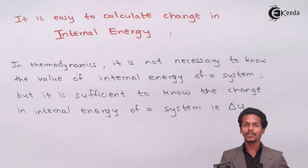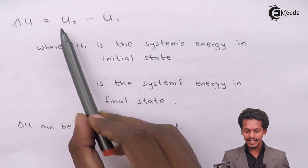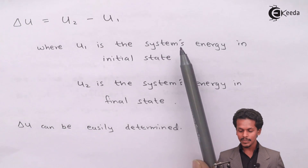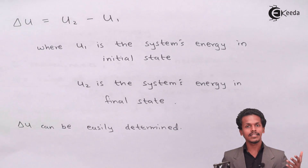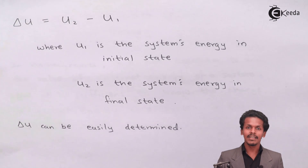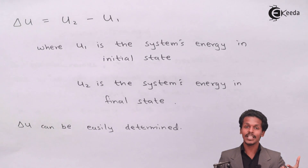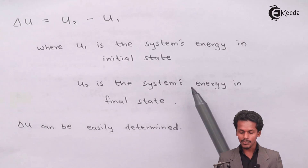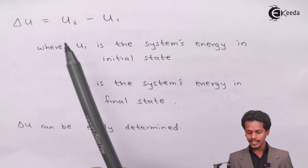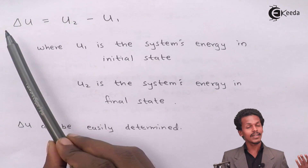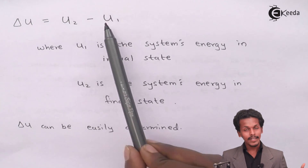Delta U is nothing but U2 minus U1. Here U1 is the system's energy in the initial state — a system in a particular state possesses an internal energy of U1. After energy has been provided to or lost from that system, there will be a change in internal energy, and U2 is the system's energy in the final state. Taking the difference between the final and initial states gives us delta U, which equals U2 minus U1.